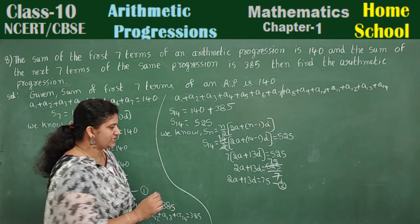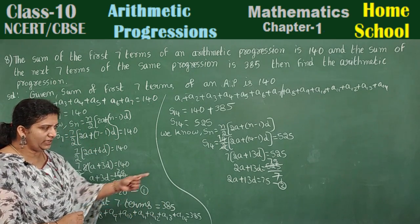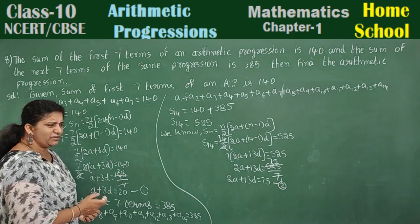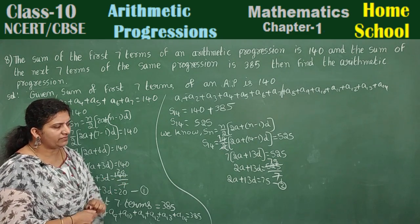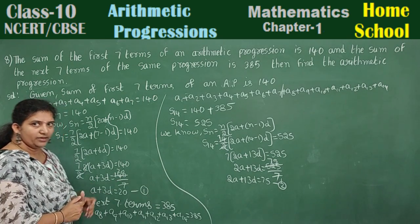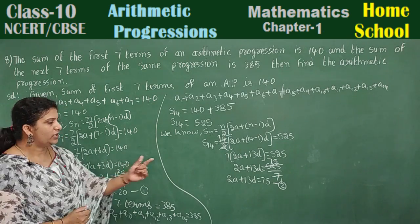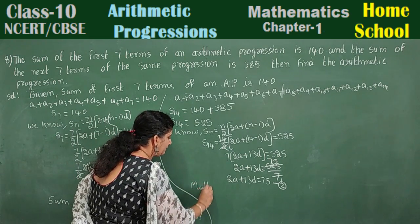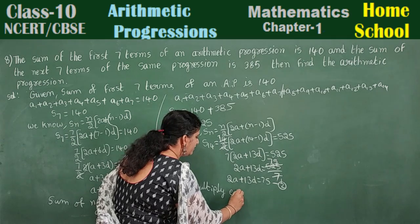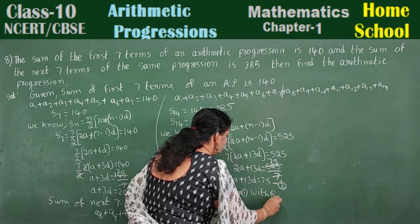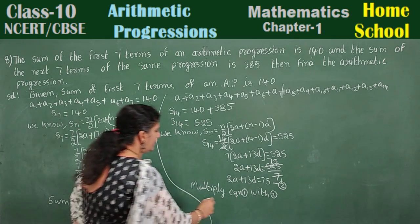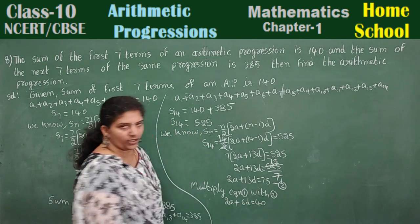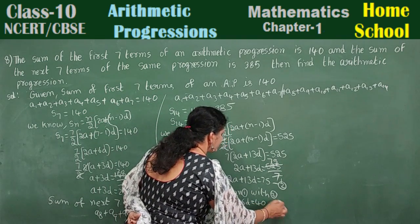I will use the elimination method. We will cancel the variable a. In equation 2 we have 2a, and in equation 1 we have only a, so multiply equation 1 by 2. That gives 2a plus 6d is equal to 40. Mark this as the third equation.